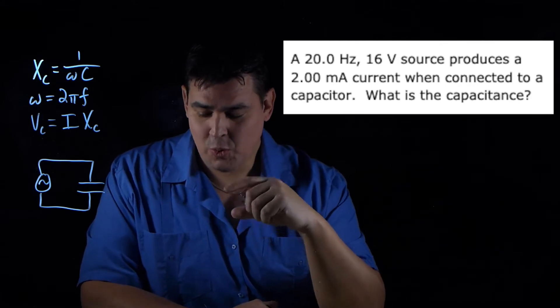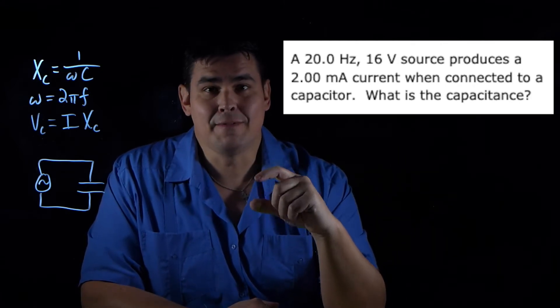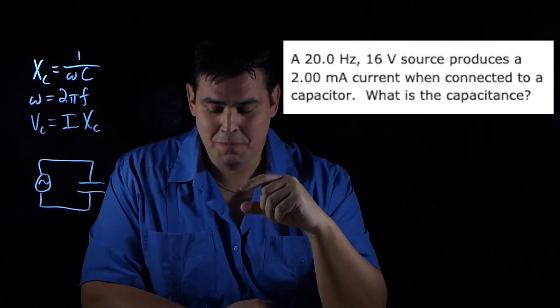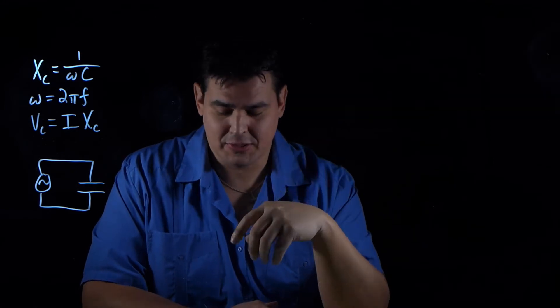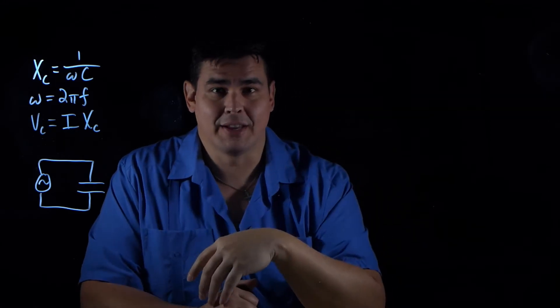Here's my second problem. This one says I have a 20 Hertz, 16 Volt source, and that produces a 2 milliamp current when it's connected to a capacitor. So what's the capacitance of that capacitor?